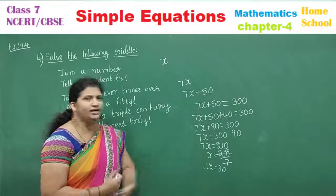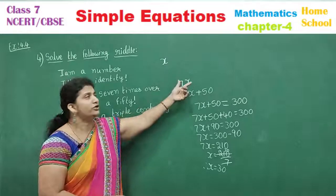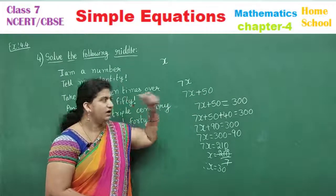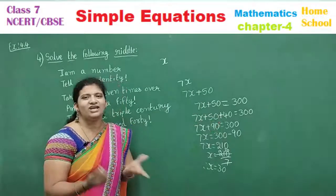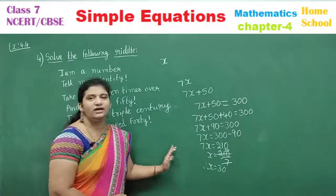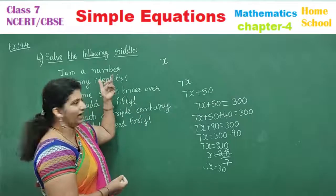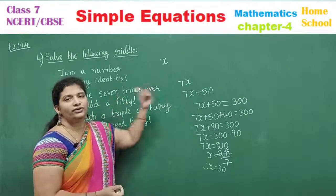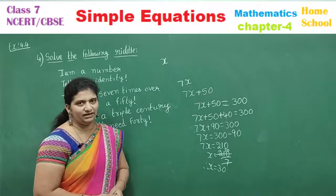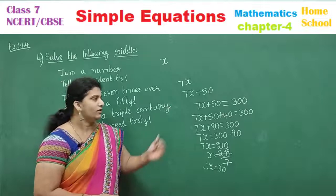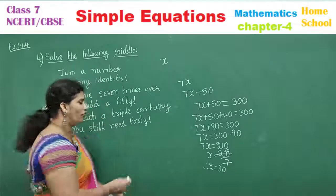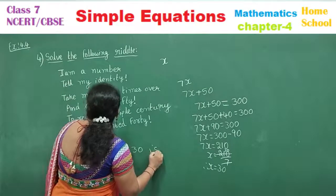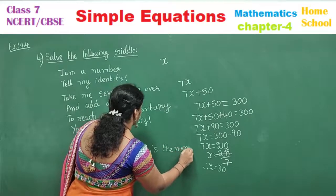Let us verify: the number is 30. Seven times 30 is 210. Add 50: 260. Add 40 more: 300 — you reach triple century. In your notes, rewrite the riddle line by line: identity X, seven times over 7X, add 50 gives 7X + 50, add 40 gives 7X + 90 = 300. Solve and write: therefore, 30 is the number.